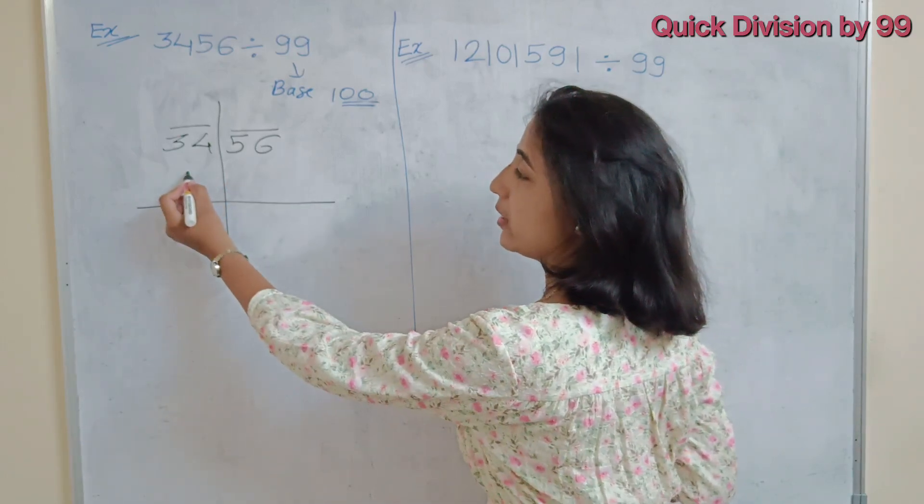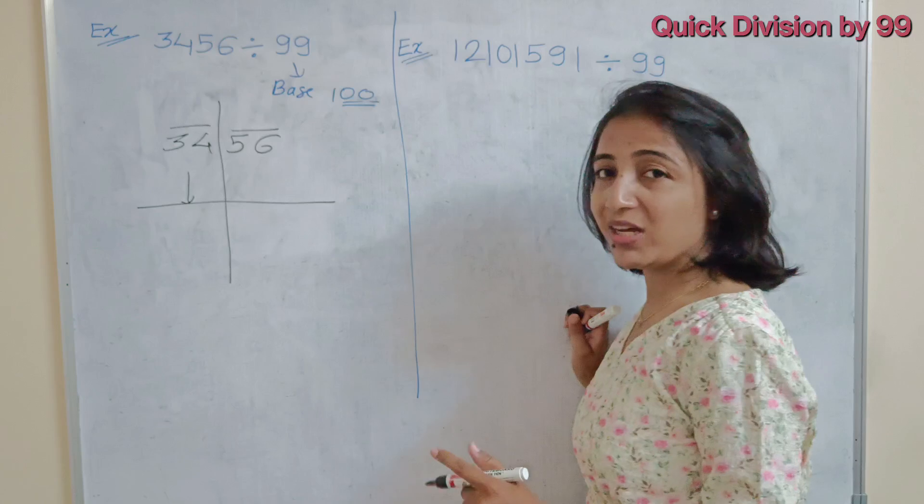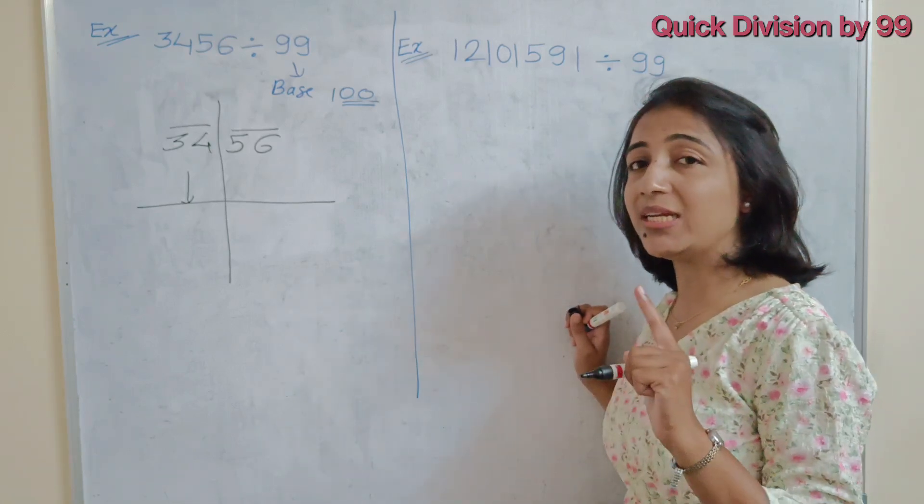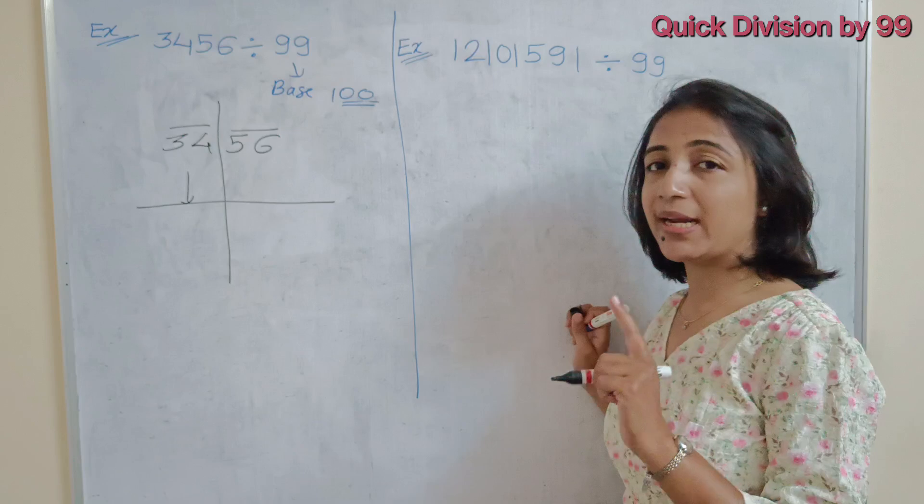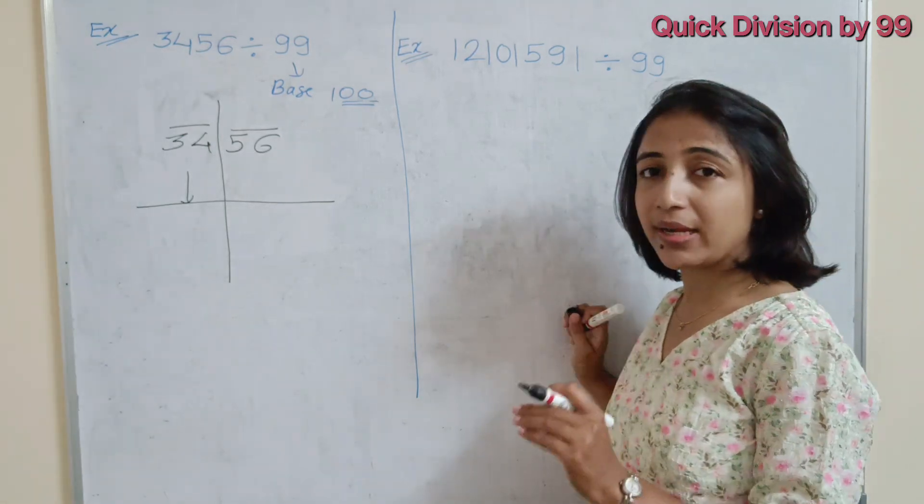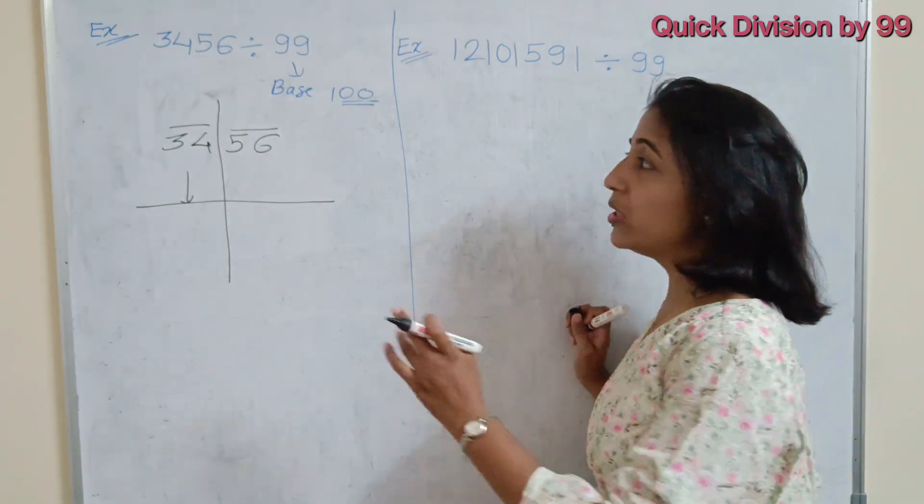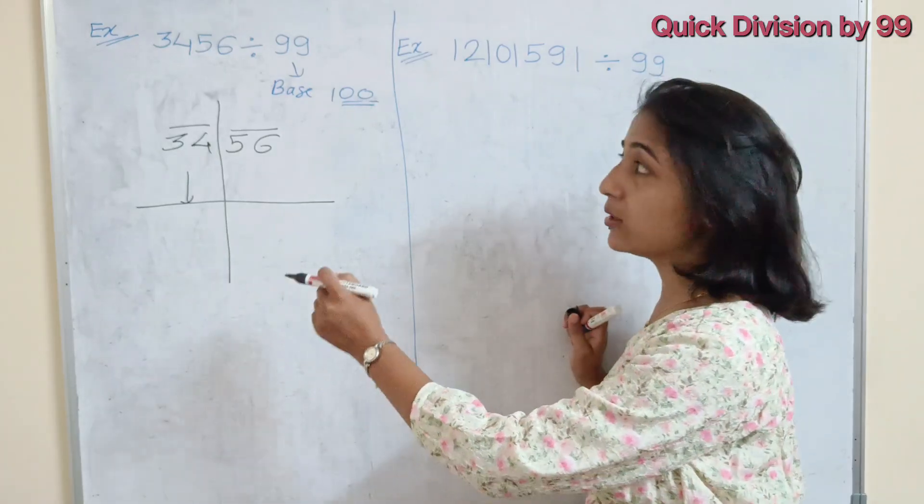Now, first step is write the first number as it is. Now, first number we are taking single digit in 9 because when we are dividing any number by 9, then 9 is near to 10 and 10 contain 1 zero.